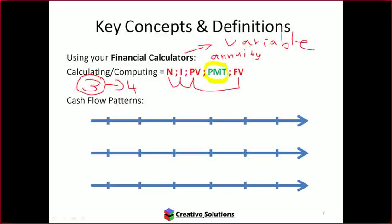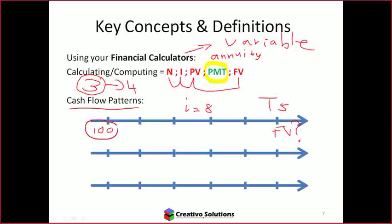Let's look at some examples. If I have $100 at time zero, compounding at 8% for 5 years, you're calculating the future value. The cash flow pattern? No pattern — it's just simple compounding, taking one amount forward. Correct.